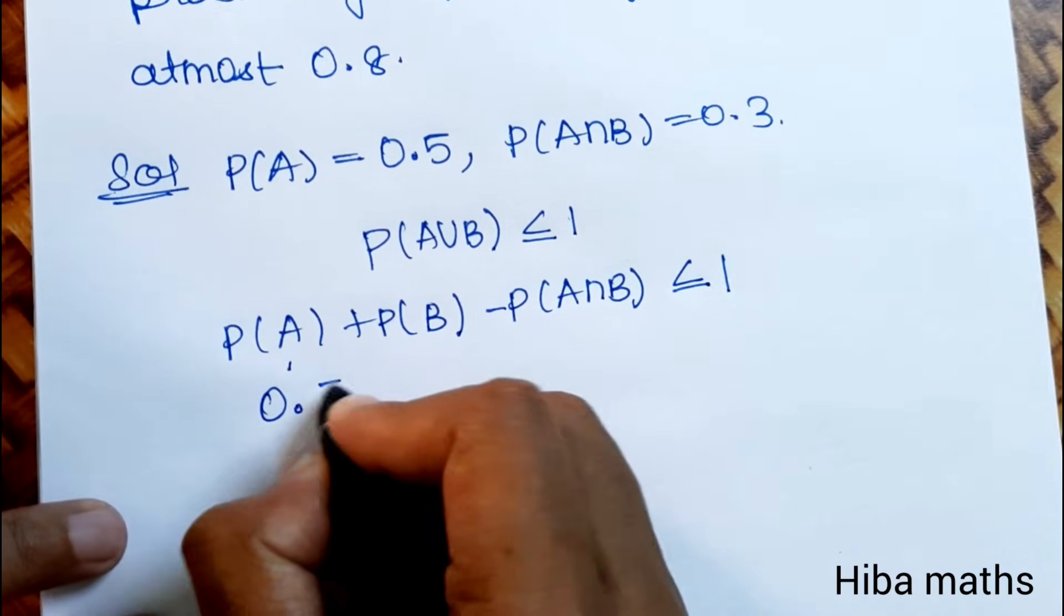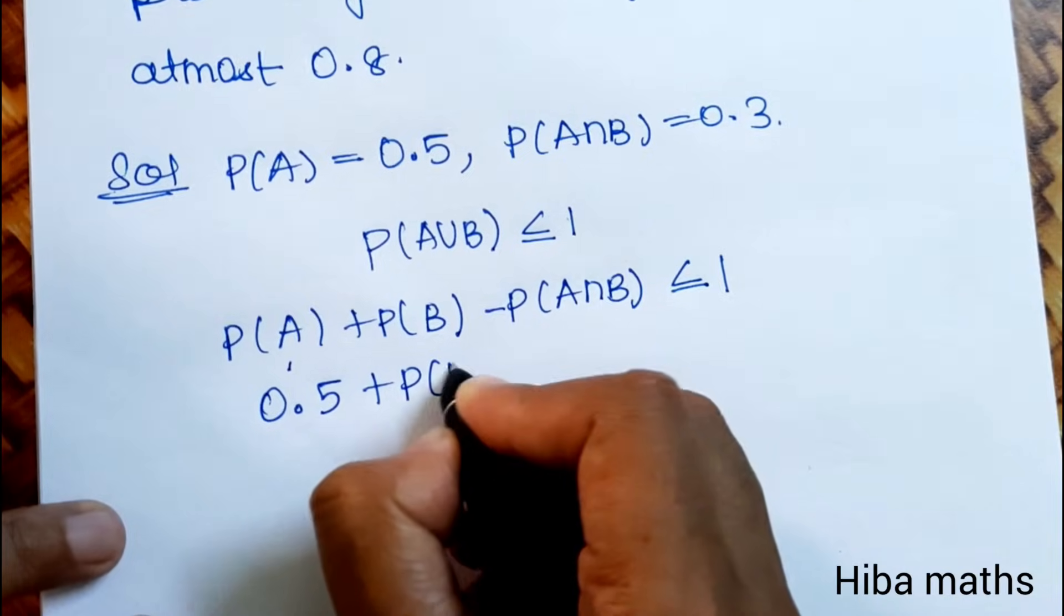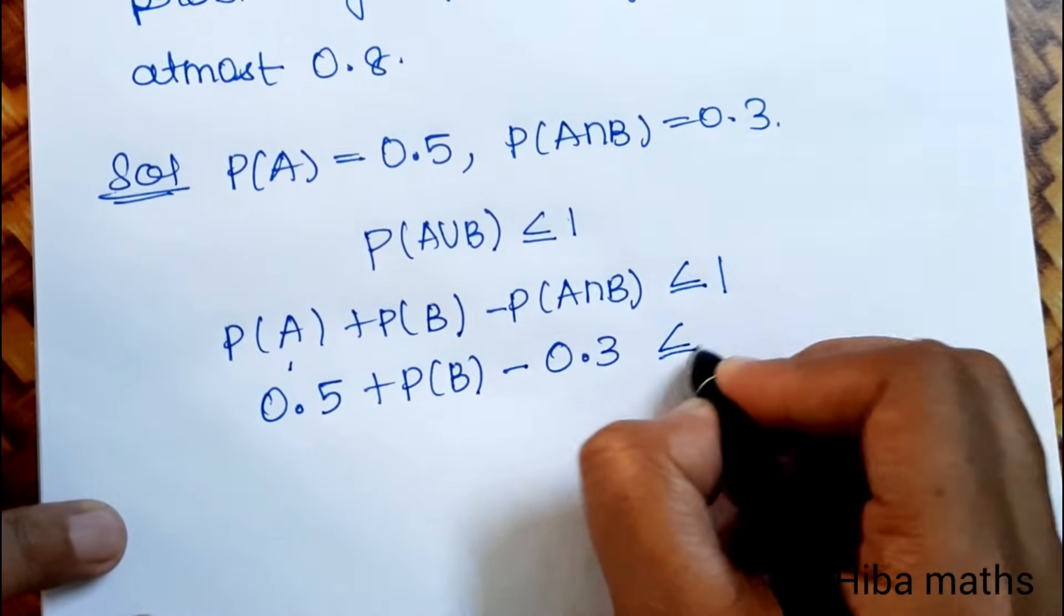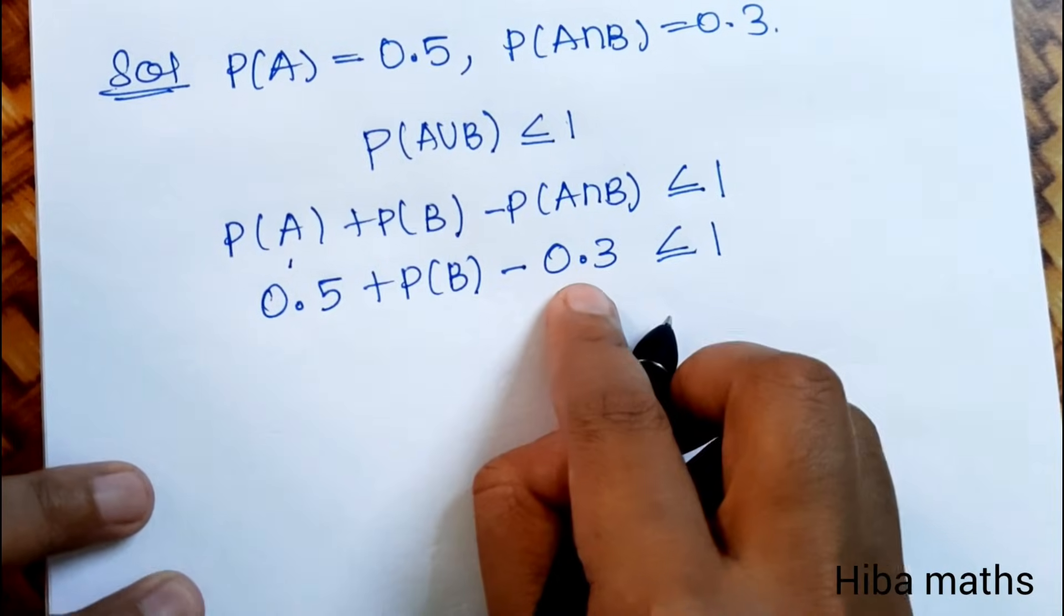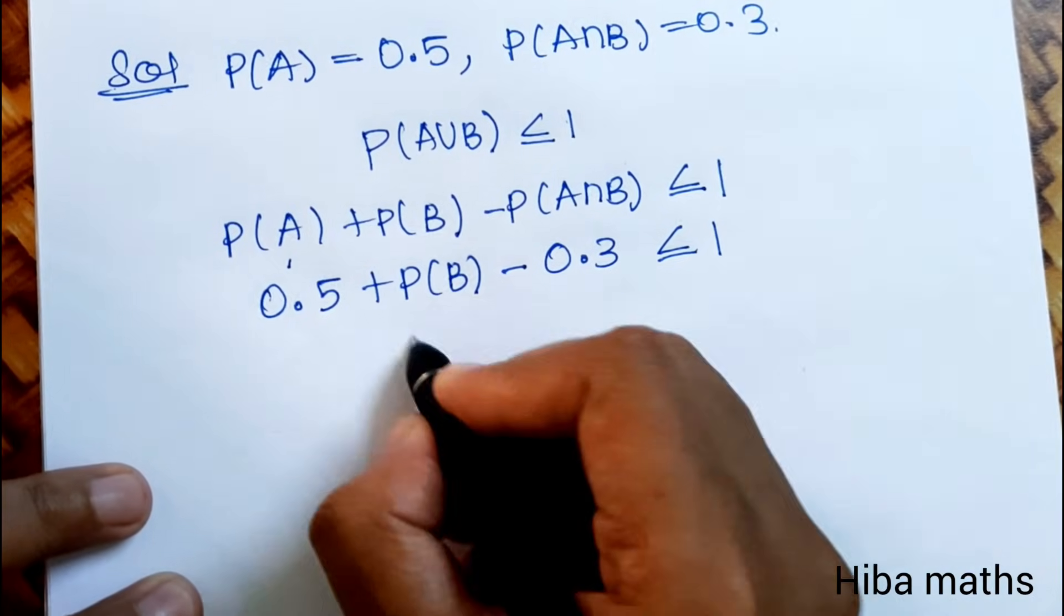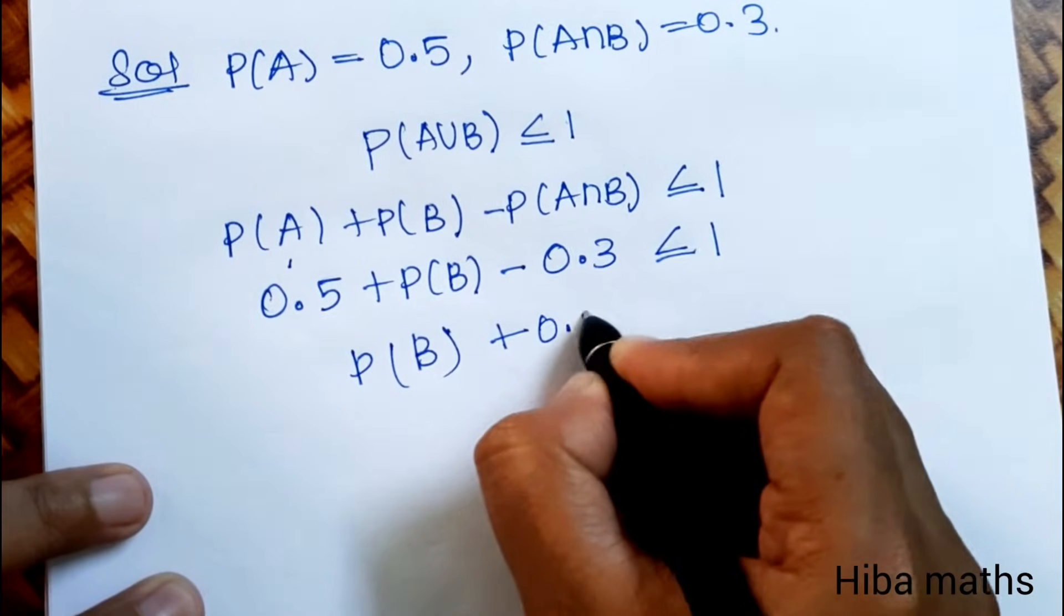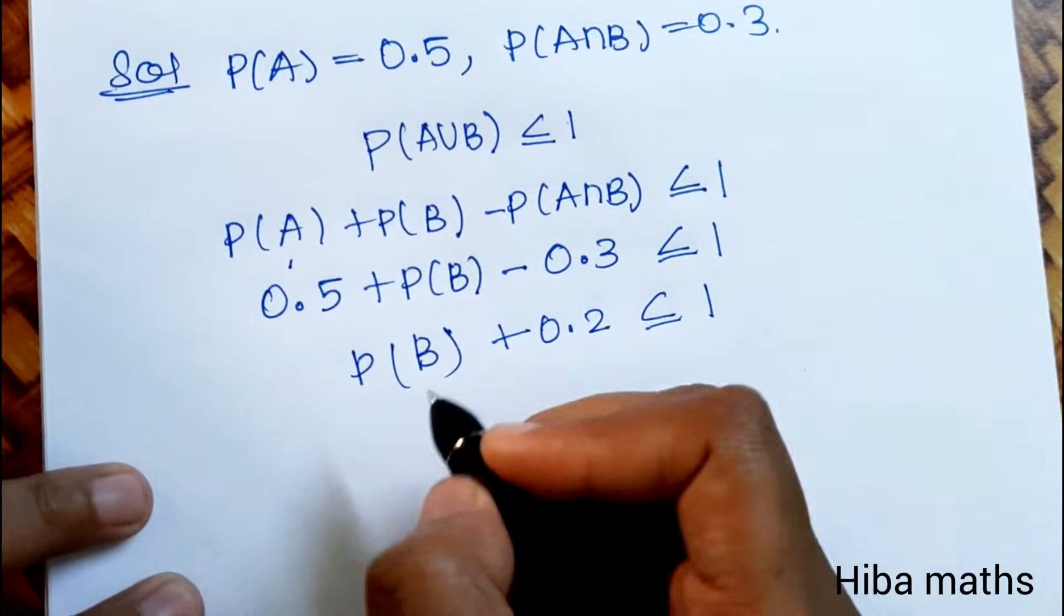Now substitute the values: 0.5 plus P(B) minus 0.3 is less than or equal to 1. So 0.5 plus P(B) minus 0.3 is less than or equal to 1, P(B) is less than or equal to 1.